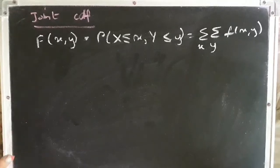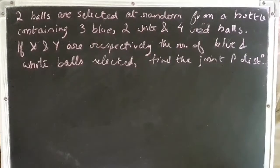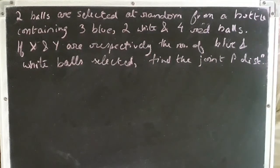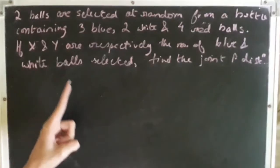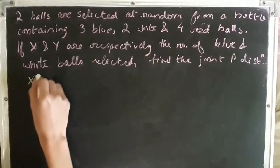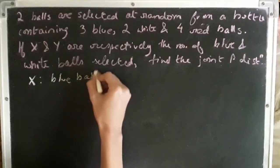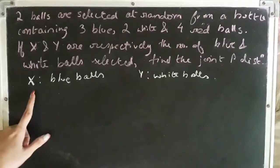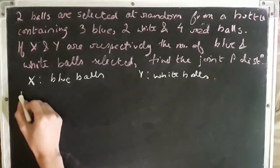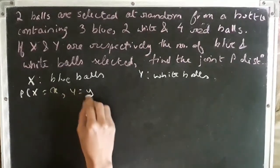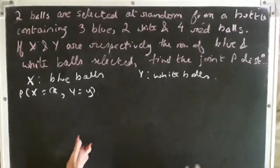Now let us take up an example to understand all these concepts better. Two balls are selected at random from a bottle containing three blue, two white, and four red balls. If X and Y are respectively the number of blue and white balls selected, find the joint probability distribution. So in this case, X is defined as blue balls and Y is defined as white balls, and we have to find the joint probability distribution for X taking on value x and Y taking on value y.